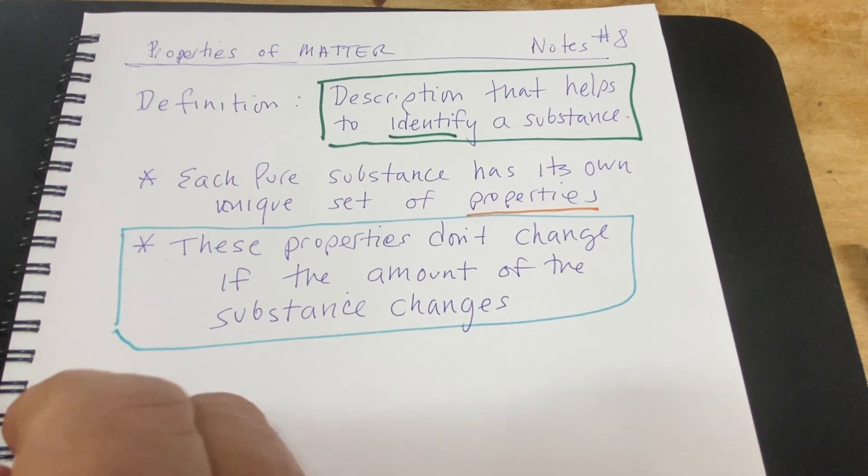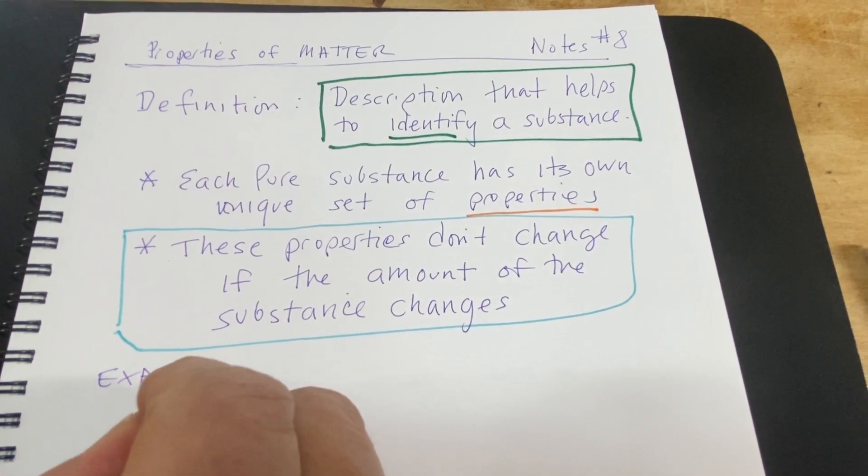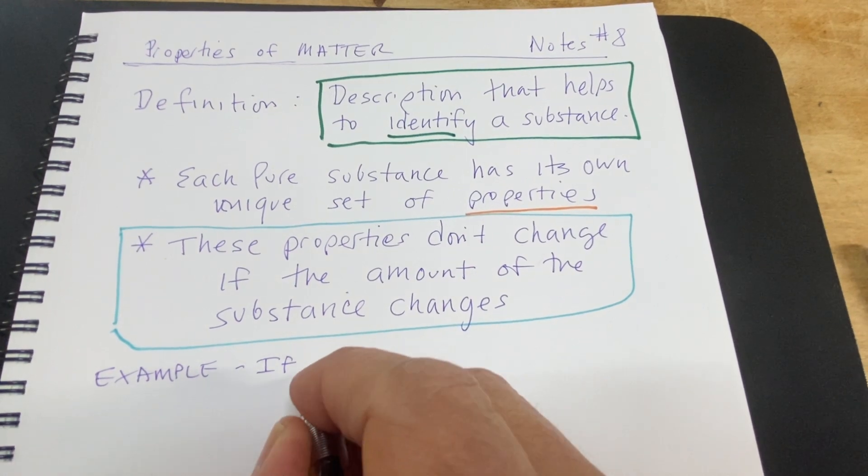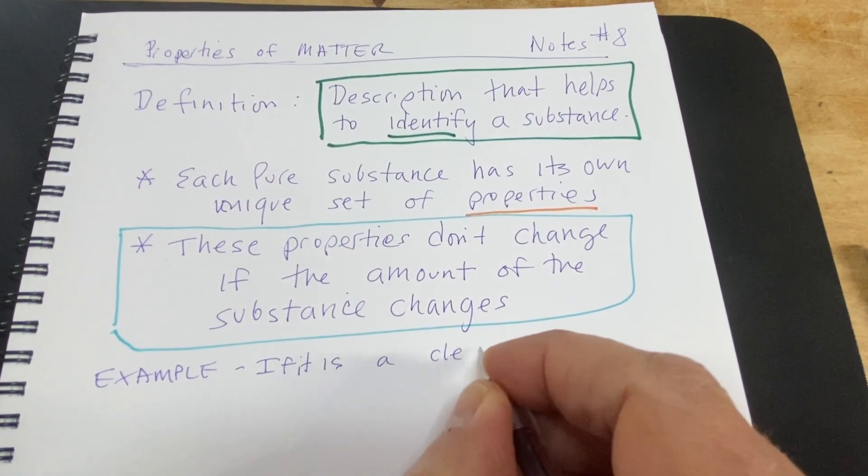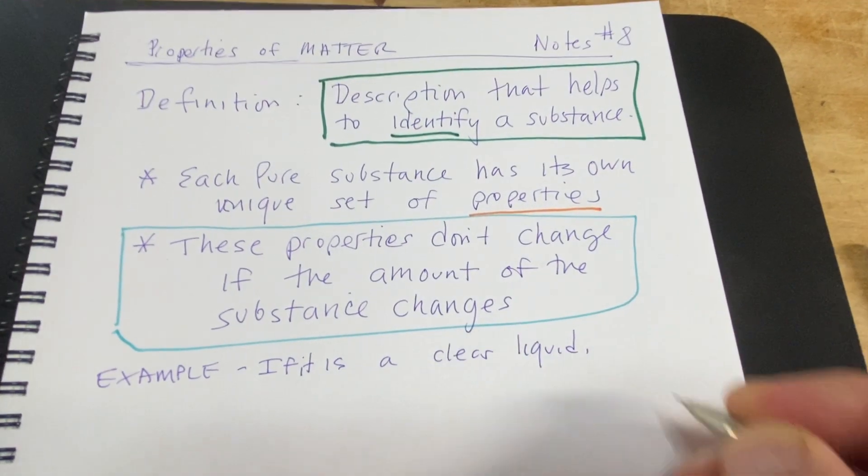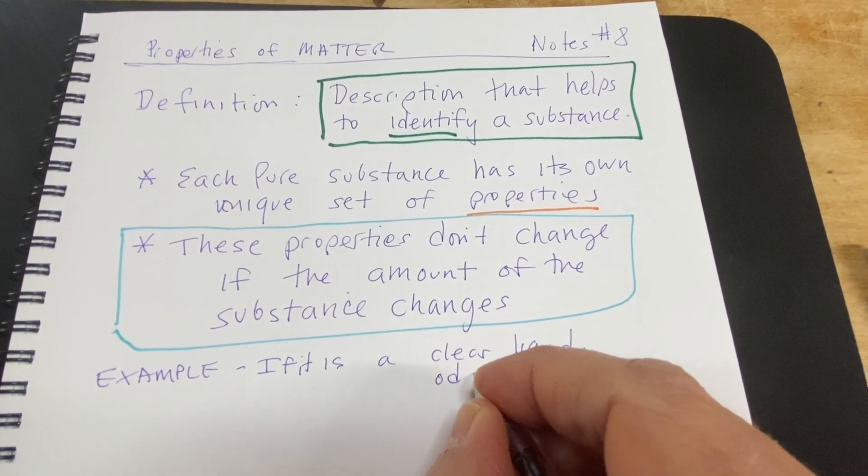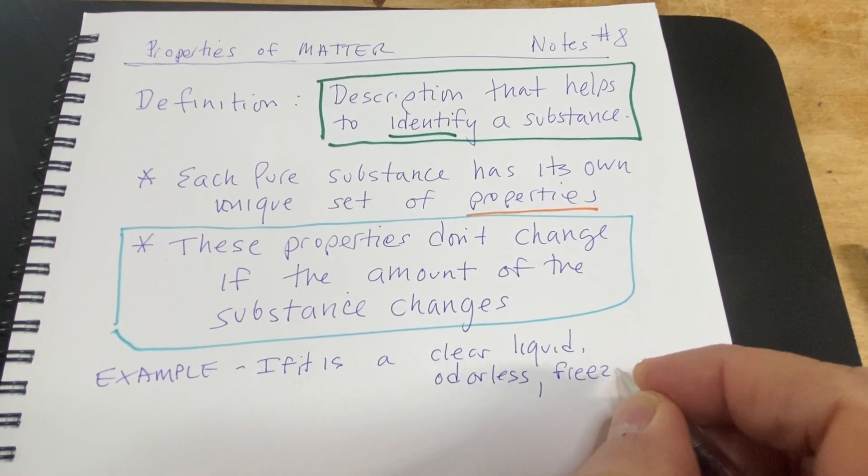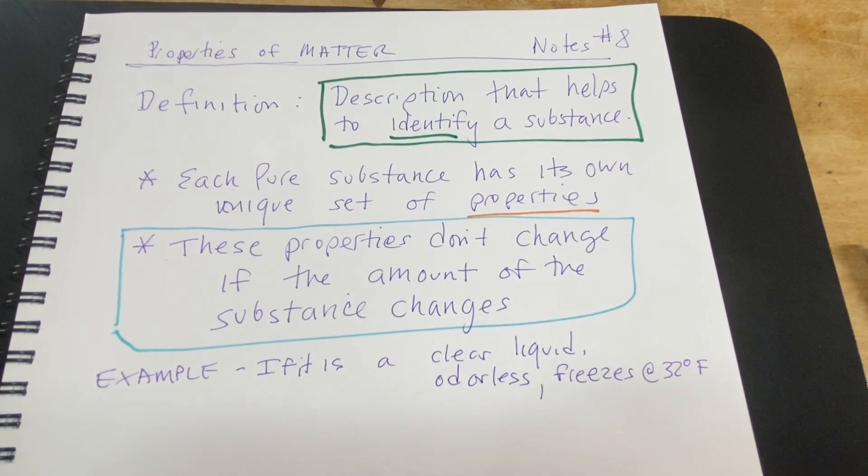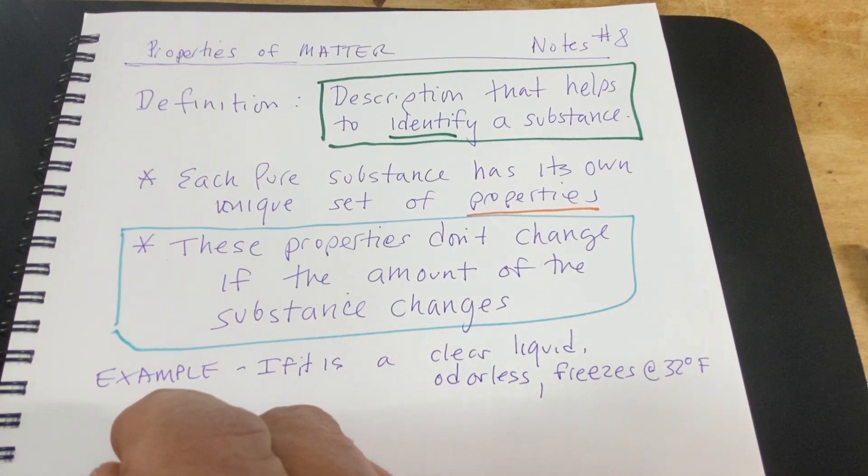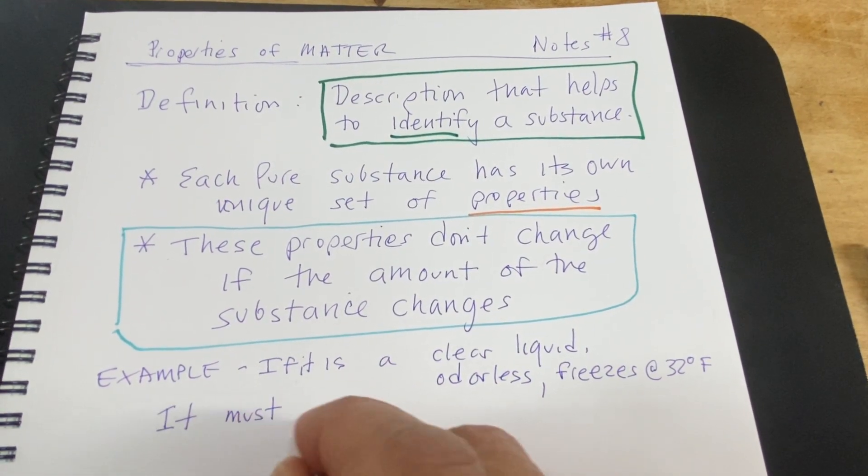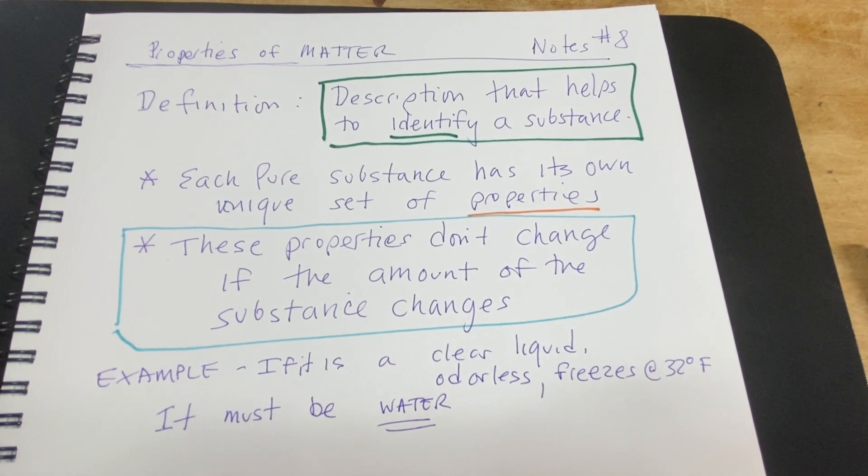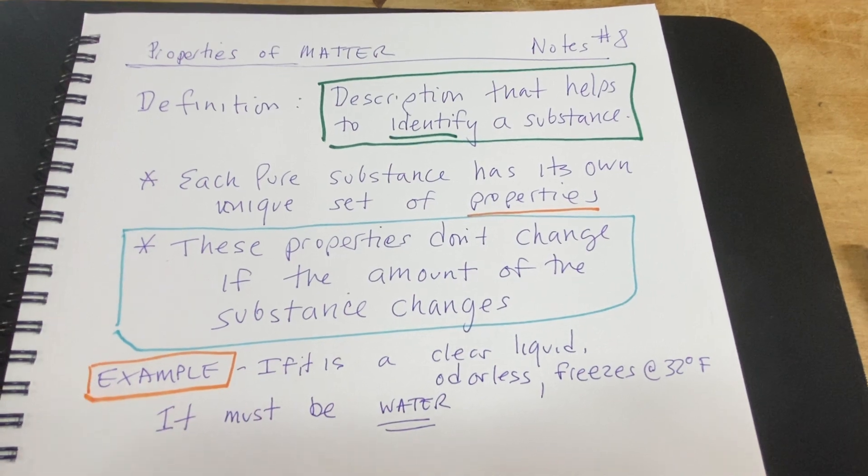An example is if I gave you a set of properties - if it is a clear liquid and it's odorless, and it freezes at 32 degrees Fahrenheit, then it must be water. That's an example of how we can use properties to identify a substance.